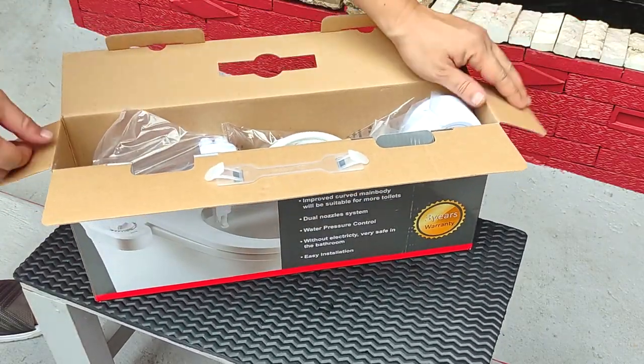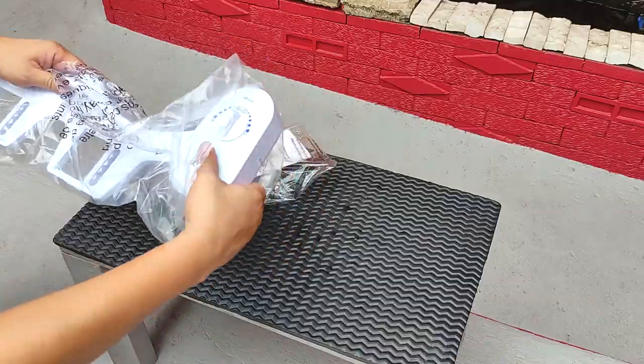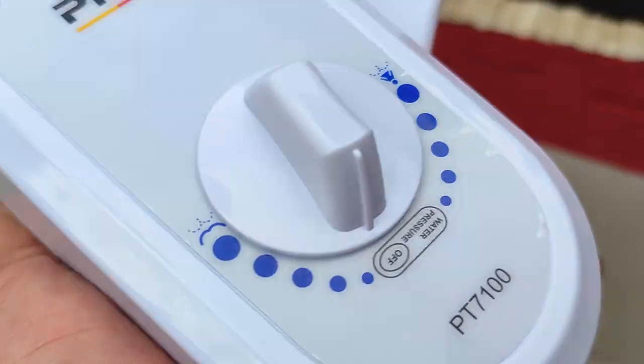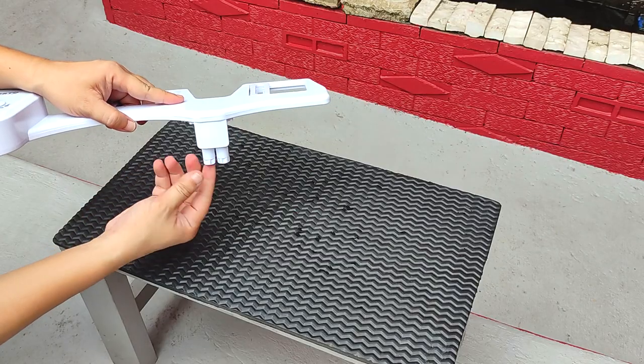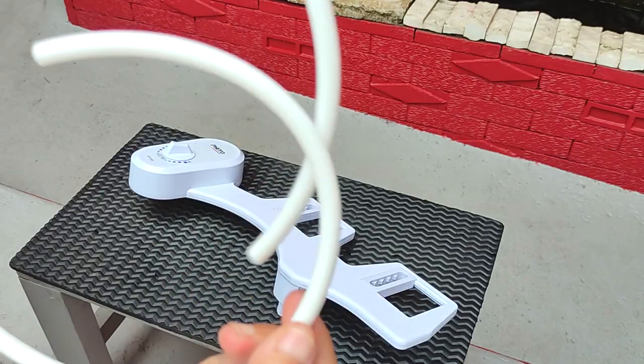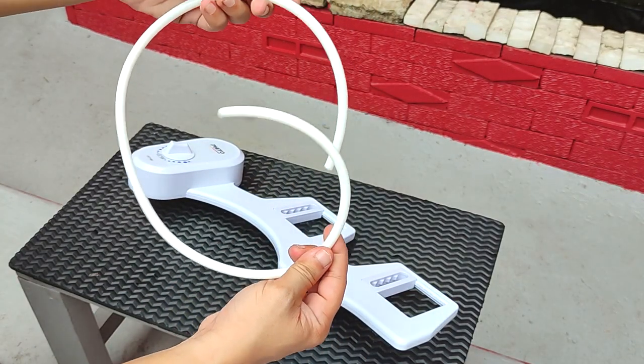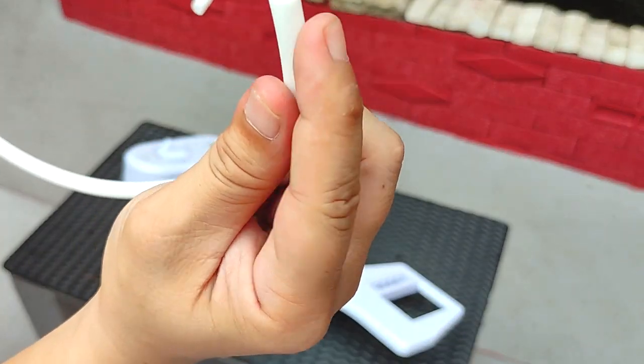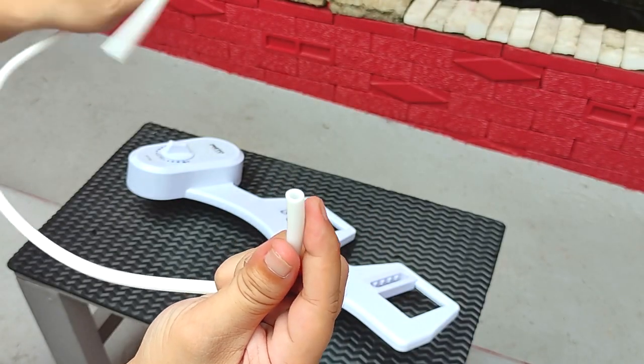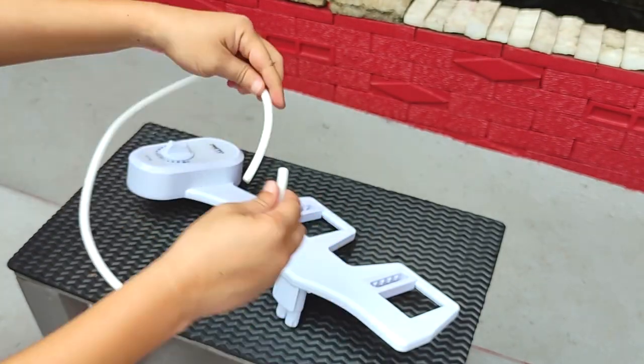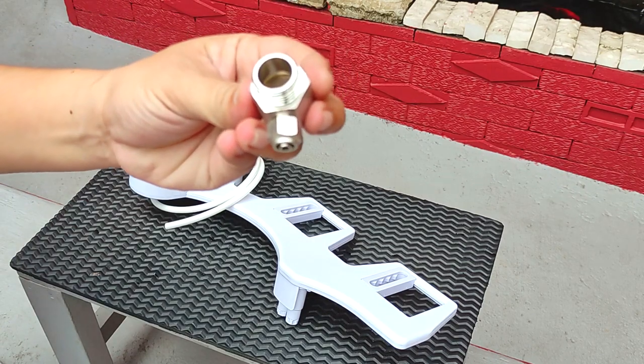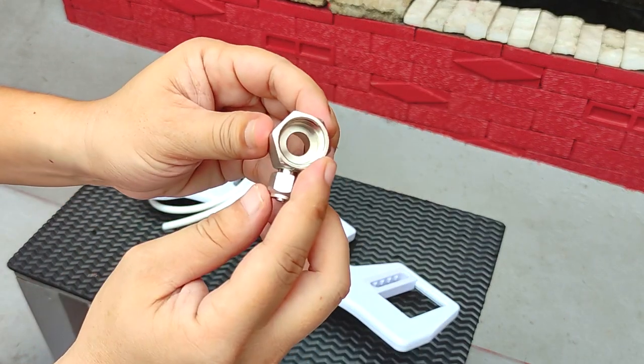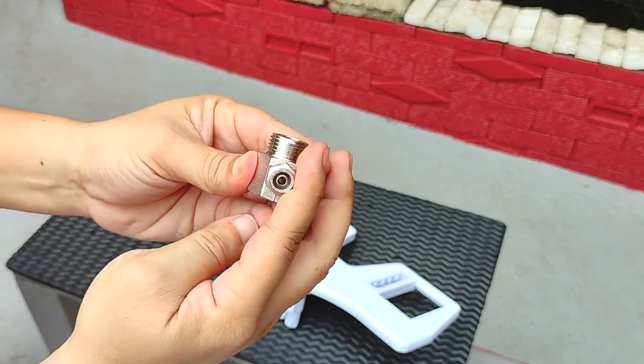We have the main toilet bidet assembly. The design is quite simple and elegant, very nice. We have a plastic tube, widely known in the industry as a PU or polyurethane pipe. I think this is about two and a half feet long. We have this half-inch metal adapter which honestly feels very premium to the touch.